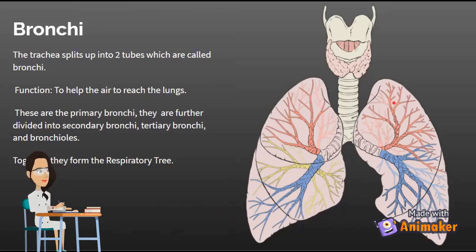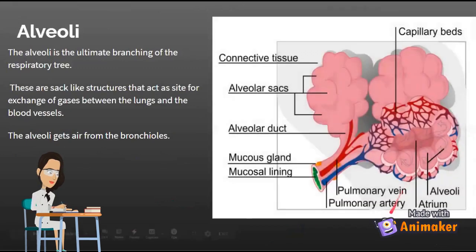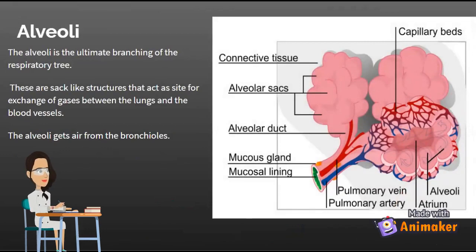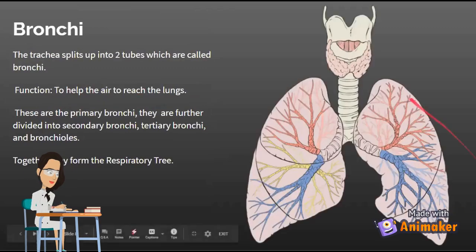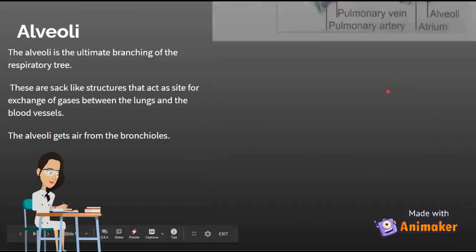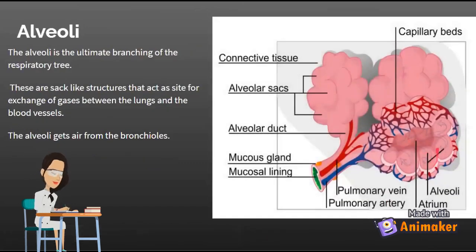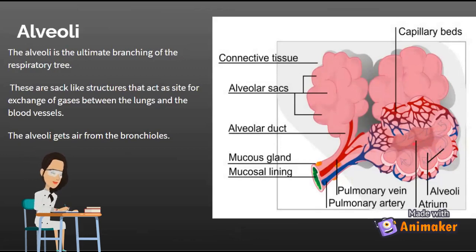Next, we'll be learning about the alveoli. The alveoli is the ultimate branching of the respiratory tree. These are sac-like structures that act as a site for exchange of gases between your lungs and your blood vessels. The alveoli gets the air from the bronchioles — the little twigs. As you can see in the diagram, these circle things are the alveoli, and they give all of the air to the blood vessels.